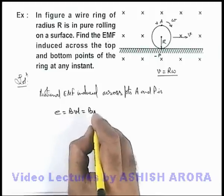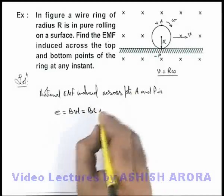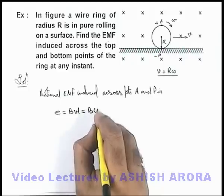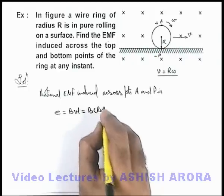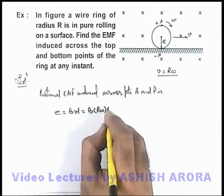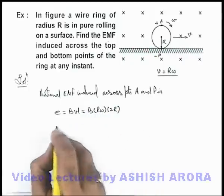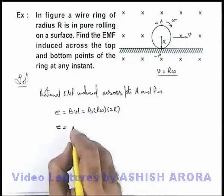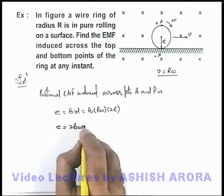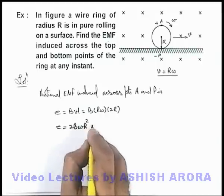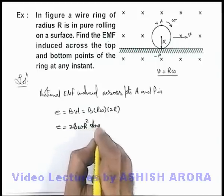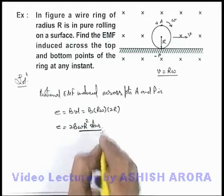So here the EMF we can write as BvL. We can write v as r omega and length as 2r, so the motional EMF we are getting is 2Bωr², and that will be the answer to our problem.